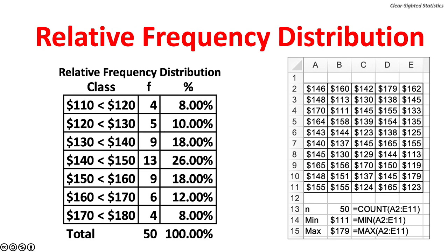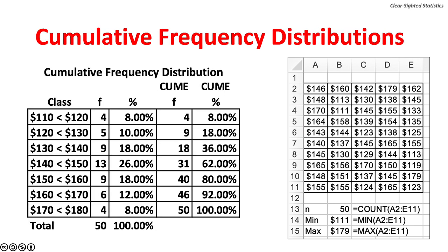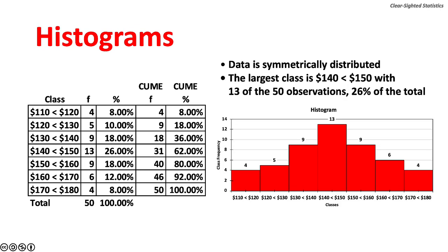The next frequency distribution is the relative frequency distribution, which shows the proportion of the total number of observations for each class. Next are the two cumulative frequency distributions: the first shows how frequencies build with each class, and the second shows how relative frequencies build with each class. Here are the frequency distributions along with each class, displayed in a chart called a histogram. The data are symmetrically distributed; the largest class is $140 less than $150, in the middle of the distribution, containing 13 of the 50 observations, or 26% of the total.